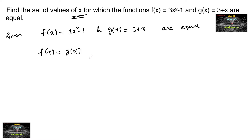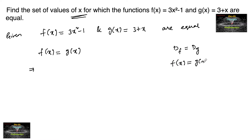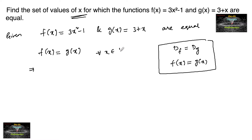Two functions are said to be equal if their domains are equal — the domain of f must equal the domain of g — and also, for any element in the domain, f(x) must equal g(x). Only then can we say the two functions are equal, for all x belonging to the common domain.